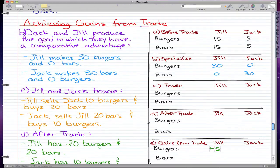Jill sells Jack 10 burgers and buys 20 bars, so she sells 10 burgers, which I abbreviate by S, and she buys 20 bars. Now for Jack, let's have him buy 10 burgers and sell 20 bars.